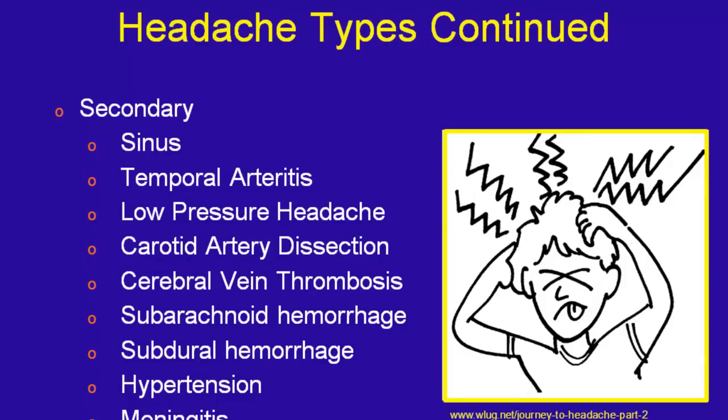Secondary headaches are the ones that usually need imaging: sinus headaches, temporal arteritis, low pressure headaches, carotid dissection, central venous thrombosis, subarachnoid hemorrhage, subdural hemorrhage, hypertensive headaches, meningitis, and traction or tumor headaches. Not all of these need imaging, but these are headaches due to an underlying cause — that's why they're called secondary headaches — and you have to treat the underlying cause, not just cover up the pain.